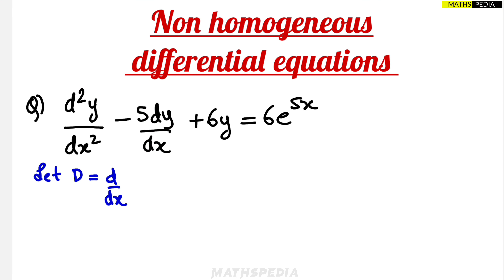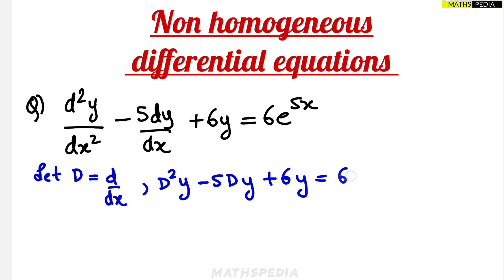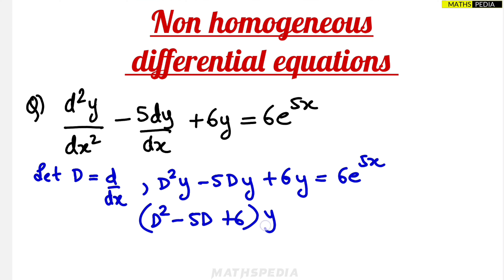We proceed with: D²y minus 5·Dy plus 6y equals the RHS function. Taking y common, this becomes (D² − 5D + 6)·y = 6e^(5x).